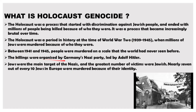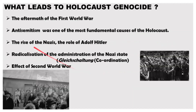These killings were organized by Germany's Nazi Party and were led by Adolf Hitler. Jews were the main target of the Nazis, and the greatest number of victims were Jewish — nearly seven out of every ten Jewish people in Europe were murdered because of their identity.